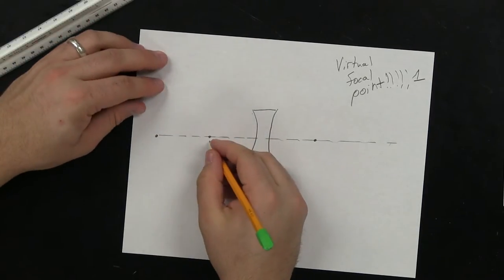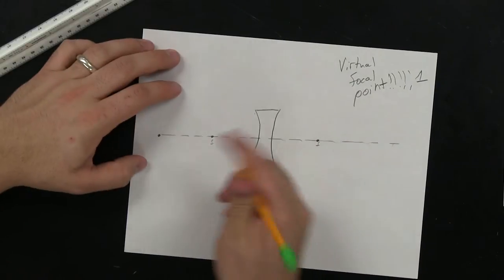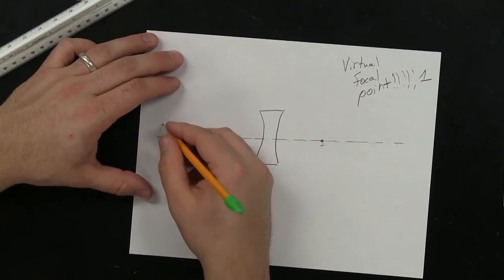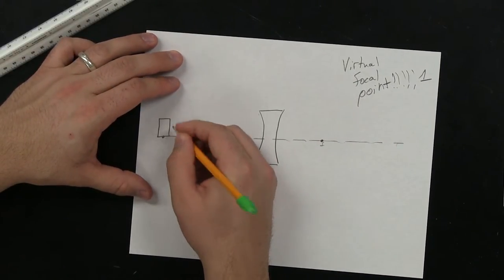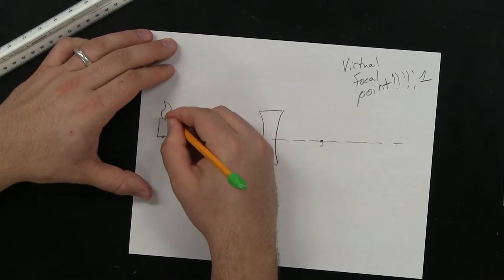So here's F right here. There's a left one. There's the right one. And then here's our object. We'll make it a candle again. Imagine that. It's a candle. Fascinating.